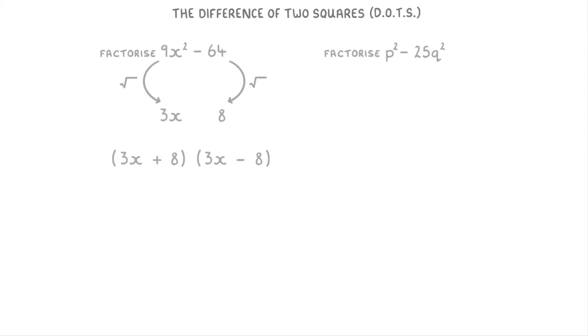For this last one, p squared minus 25q squared, the square root of p squared is p and the square root of 25q squared is 5q. So we get p plus 5q and p minus 5q.